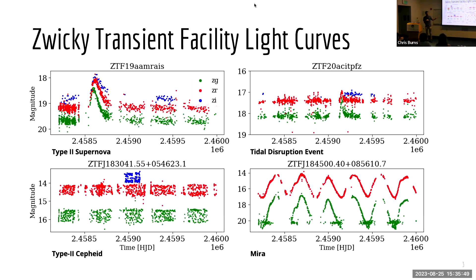So here are a few examples of light curves from ZTF. The key takeaway is just to illustrate kind of the flavor of the different types of light curves coming out of ZTF, like the different shapes. Up here we have Type 2 supernova, tidal disruption event, Type 2 Cepheid, and then Mira, and also the different sampling rates, the sparsity of the points, and the noise in the light curves.